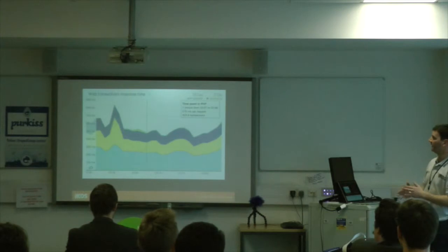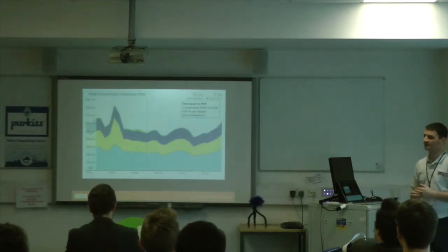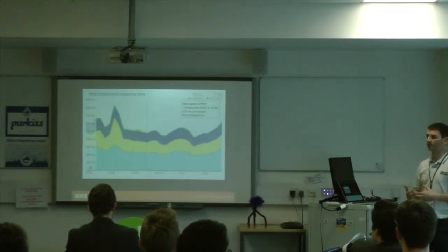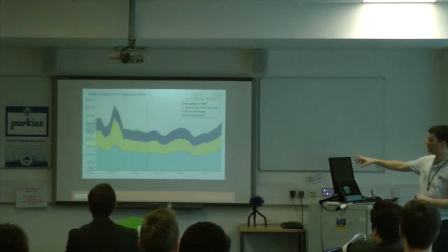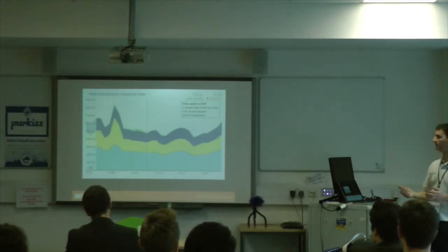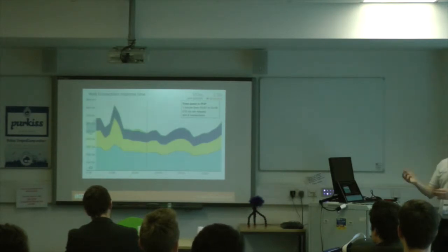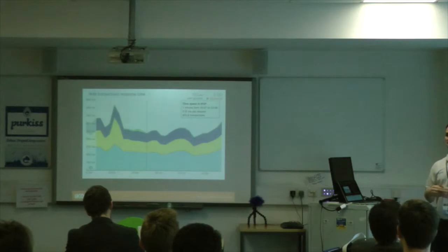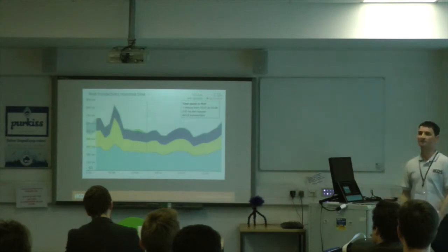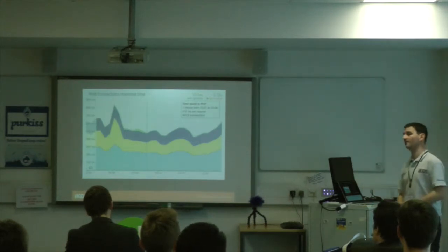New Relic allows you to dig into the depths — you can drill through to transactions, all the way down to specific database calls and find out where your bottlenecks are. It might not always be where you think it is. For example, when we were originally developing this we were using PHP 5.4. I went to a session at Drupal Camp Scotland by Lorna Jane and she said everyone's got to upgrade to PHP 5.5. We switched to PHP 5.5 and that blue section was cut in half immediately. The performance gain from PHP 5.5 is not to be underestimated.